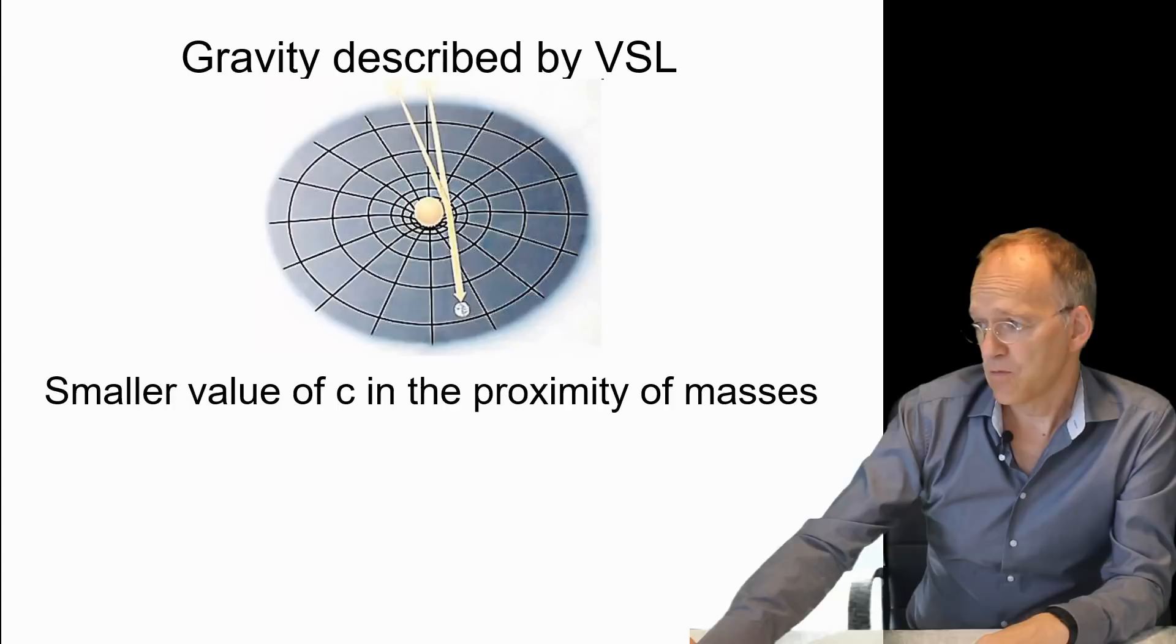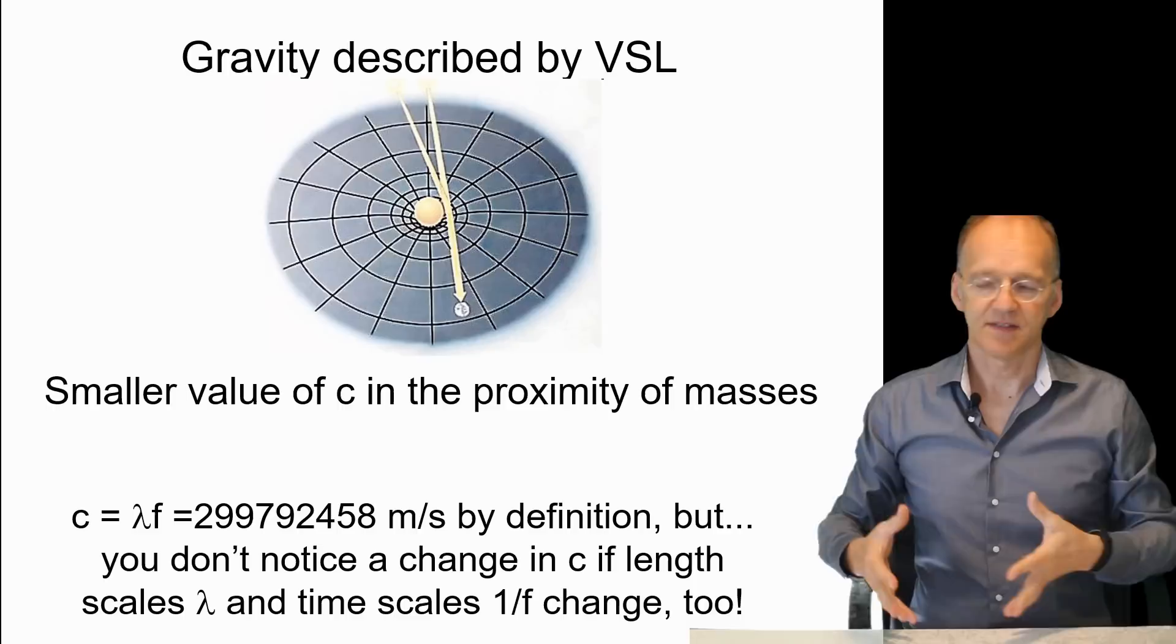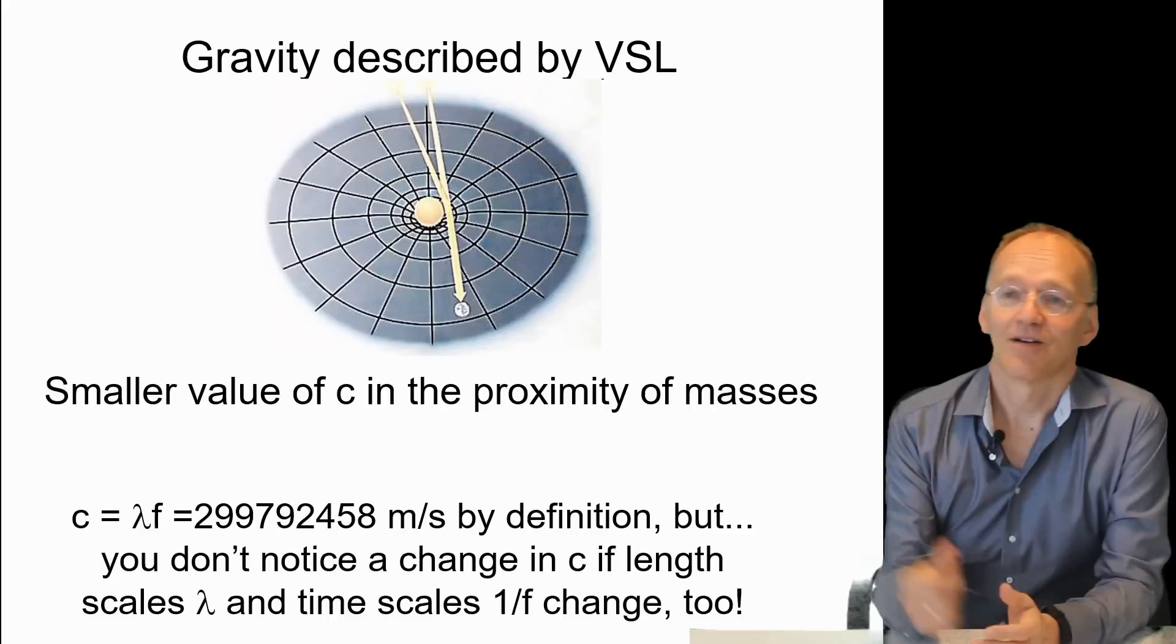If we review the variable speed of light approach, what's the idea? The speed of light is influenced by the presence of masses. If you're closer to a mass, the speed of light is lower.